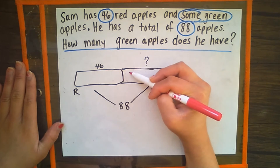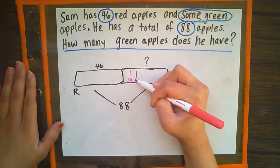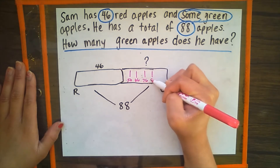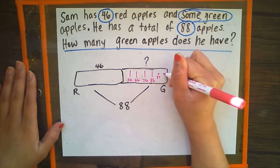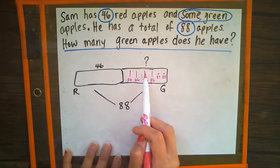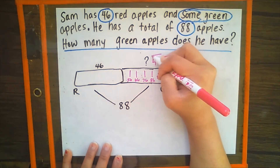So let's see — we have 46. Now I'm going to use a quick 10 drawing: 56, 66, 76, 86. I'm so close. 87, 88. So if these are our quick 10s and the dots represent our 1s, how many green apples does Sam have? Good job. 10, 20, 30, 40, 41, 42. Sam has 42 green apples.